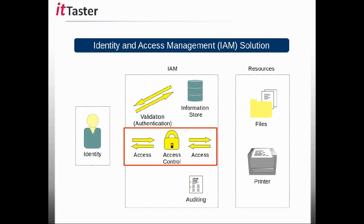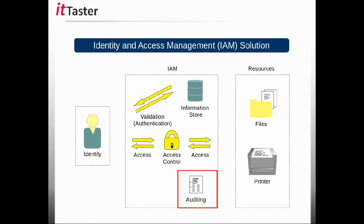Next is access control. Once authenticated, the user — the identity — can then be assigned access to network resources. Auditing can also form part of an IAM solution. Being able to audit identity validation and authentication, both successful and unsuccessful, adds an additional layer of security.